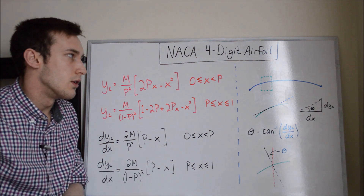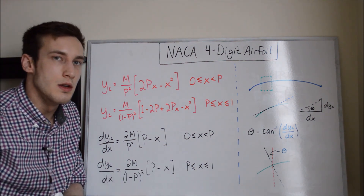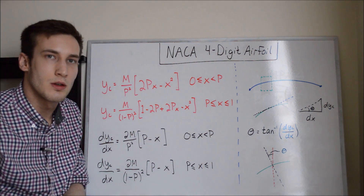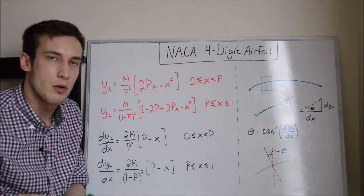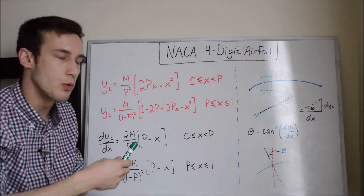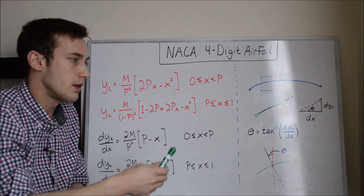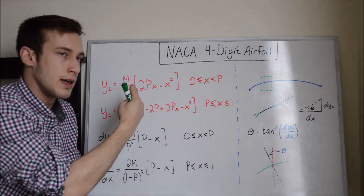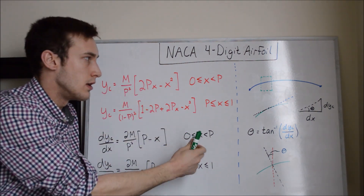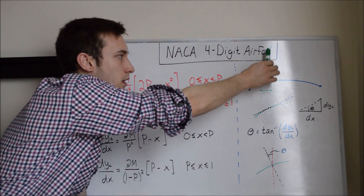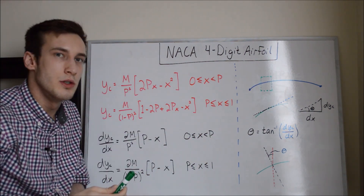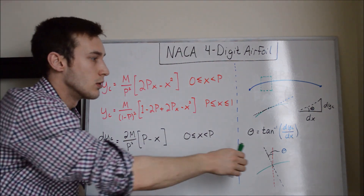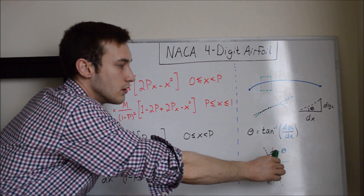The reason we need theta is that when adding thickness to the mean camber line, you might think to add it vertically at each X point. However, you actually need to add the thickness perpendicular to the mean camber line, which is where theta comes into play. Once you know the slope, you can correctly add the thickness perpendicular to the camber line.